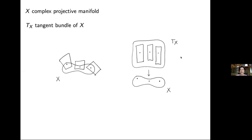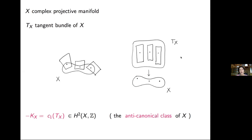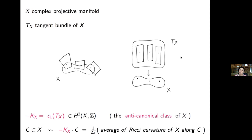Let me start by giving you the setup. We will be working with a complex projective manifold X, and we are going to look at its tangent bundle. The tangent bundle of X is assembled by looking at all the tangent spaces at all points of X at the same time. Once we have any vector bundle, we can look at its Chern characters, in particular its first Chern class, and this is what we call the anticanonical class of the complex projective manifold X. This is an element in the second cohomology group of X, so if you give me any curve C contained in X, I can intersect it with the anticanonical class, and this gives me a number — an integer — that measures the average of the Ricci curvature of X along C.